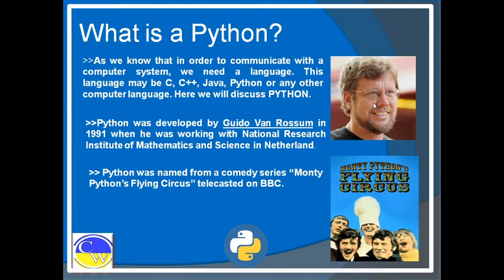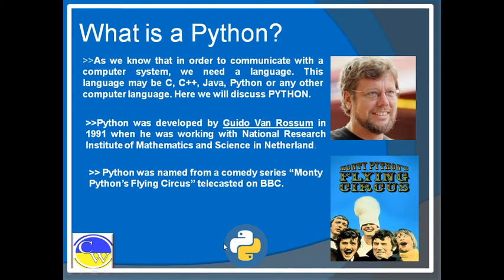So he is Guido Van Rossum. Python was named from the comedy series Monty Python's Flying Circus. This is the banner of Monty Python's Flying Circus — after this circus name, the language Python was named. It was first telecasted on BBC. That is why Guido Van Rossum named this language Python. Otherwise there is no snake connection — you need not be afraid of snakes, it is a computer language.